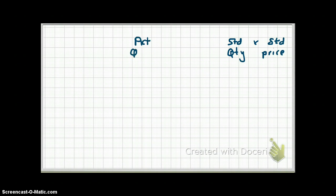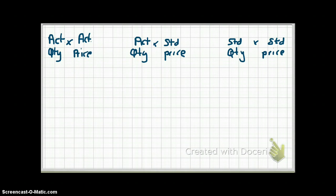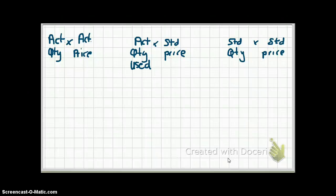You set up the problem the same way as before: right-hand side has standard quantity times standard price; left-most column has actual quantity times actual price; middle has actual quantity times standard price. However, when purchased and used quantities differ, you need two middle columns: one for actual quantity used at standard price, and another for actual quantity purchased at standard price. We always only flex the quantity — the price stays standard for both middle columns.